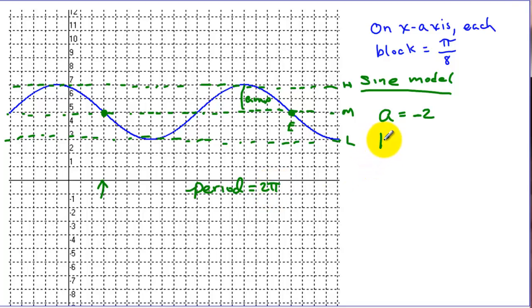To find b, we take 2π and divide it by the period, which in this case is 2π, and we get 1.